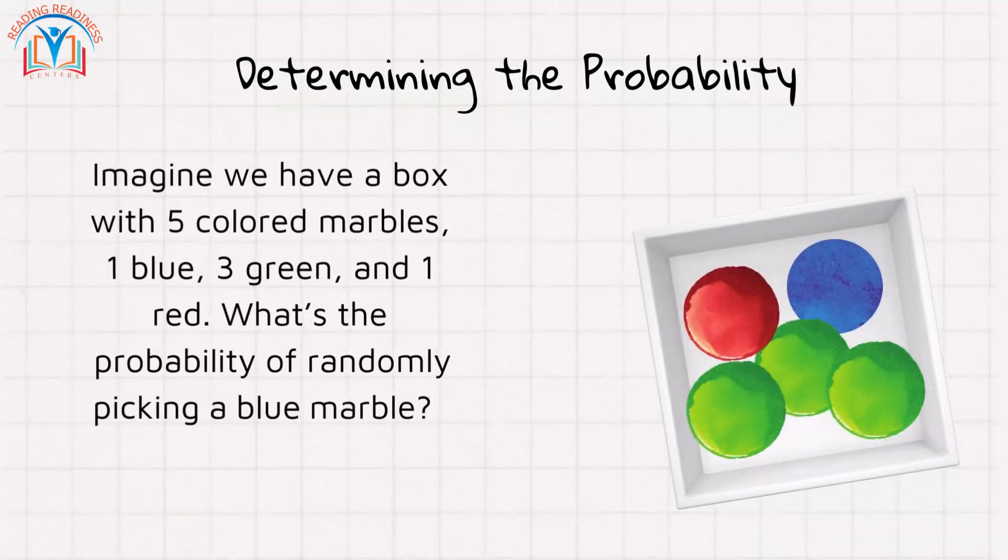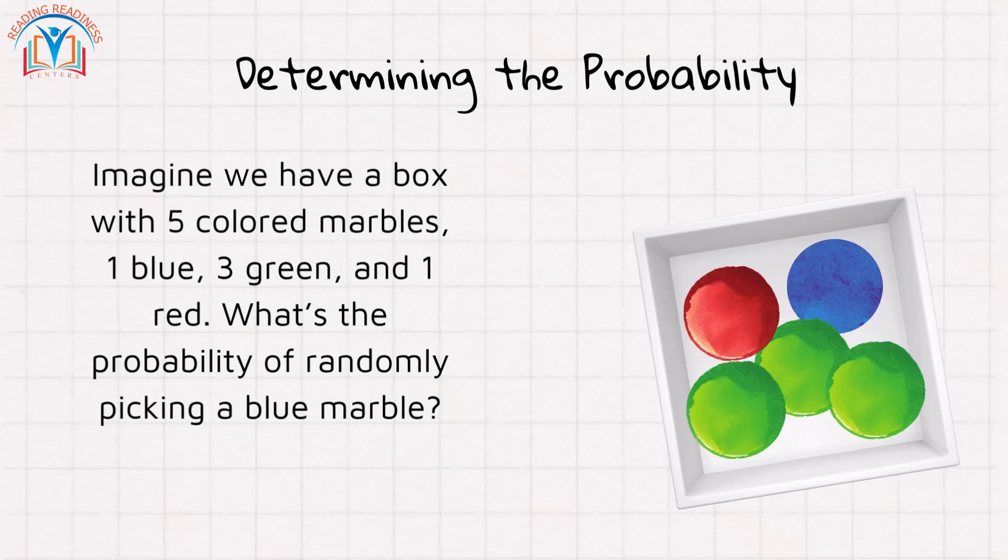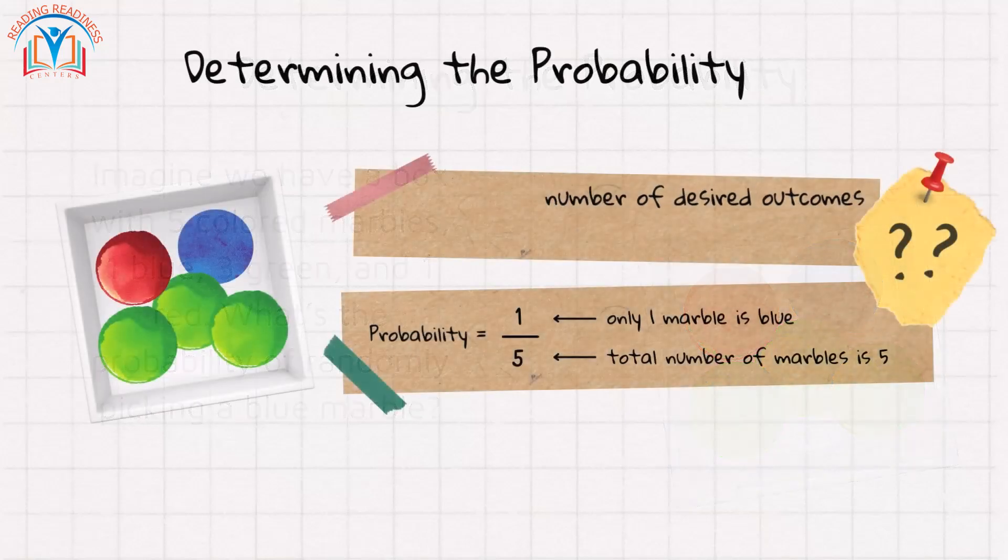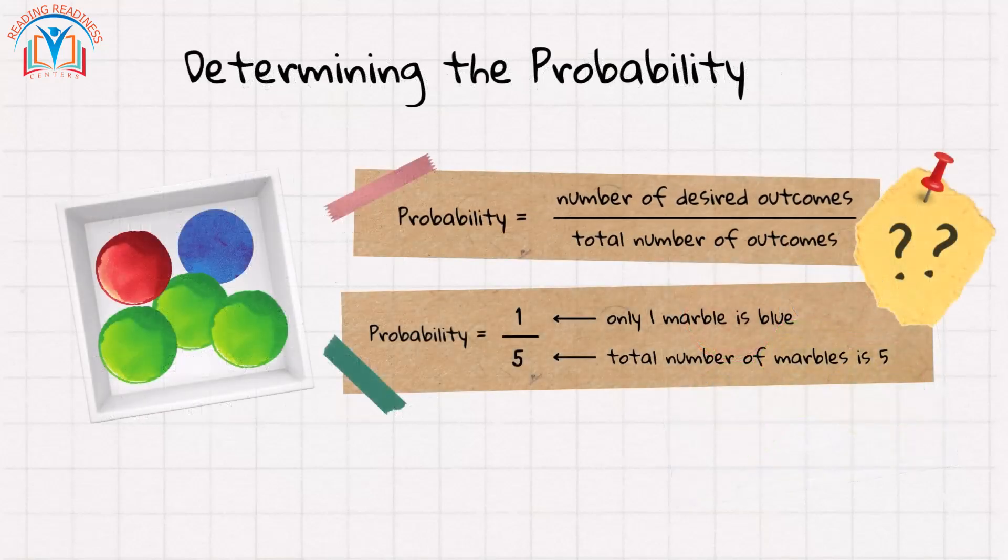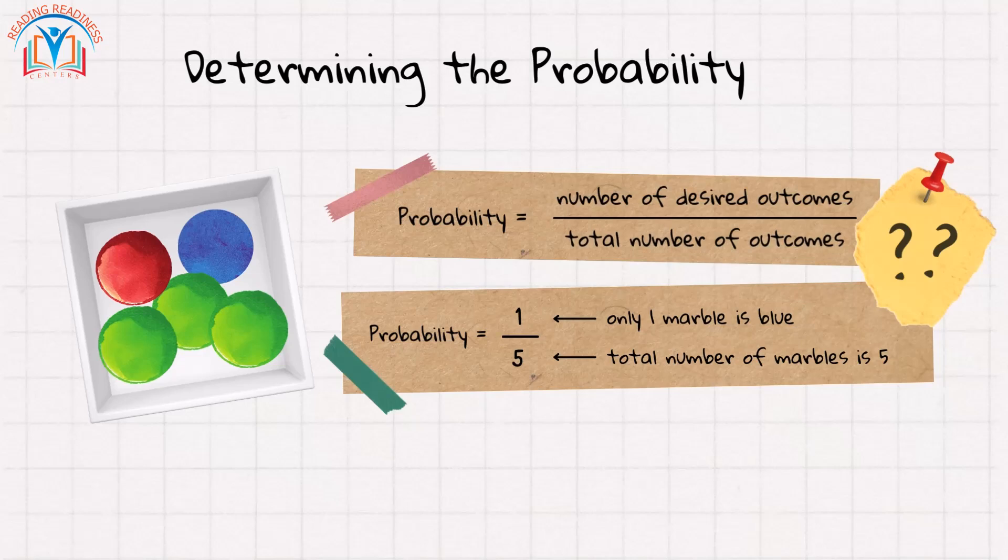What's the probability of randomly picking a blue marble? As we know, the probability is the number of desired outcomes divided by the total number of outcomes. Here that's one blue marble out of five total marbles, so the probability is 1/5.